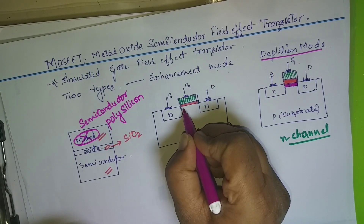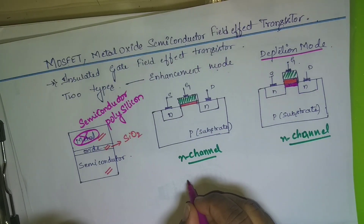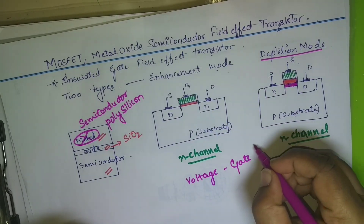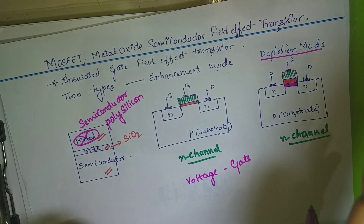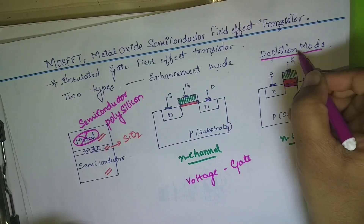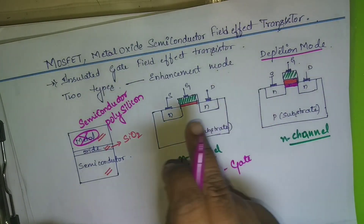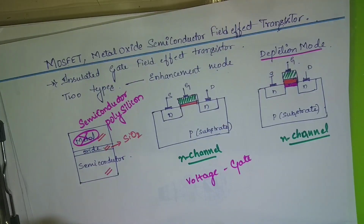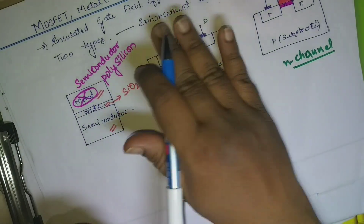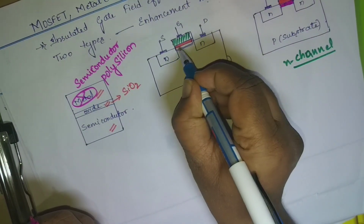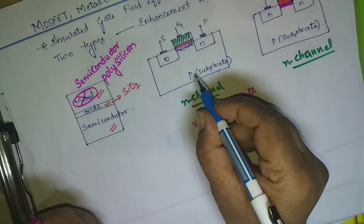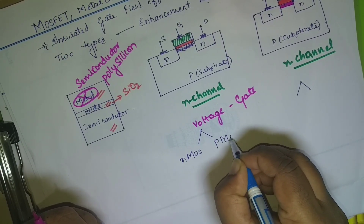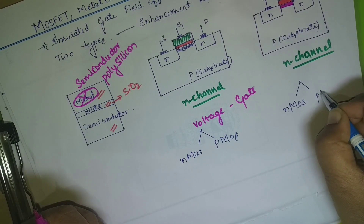The major difference is: in depletion mode, the N and N regions are connected and a channel is already formed. Whereas in enhancement mode, there is no channel formation — the channel is formed only when you apply voltage to the gate. In depletion mode, applying gate voltage breaks down the channel. This is the major difference between enhancement and depletion mode transistors. Based on the type of channel formation, there are also two sub-classifications: NMOS and PMOS.